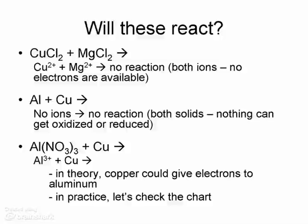Now we need to remember what we learned two weeks ago about predicting whether two things will react. If we have copper chloride and magnesium chloride in a reaction, they're both in their 2+ state, and they're both ions. So we're not going to have a reaction because neither of them has electrons available to give up.